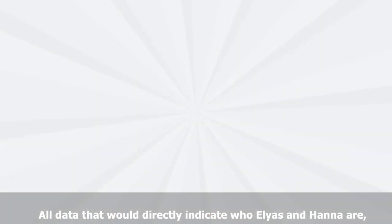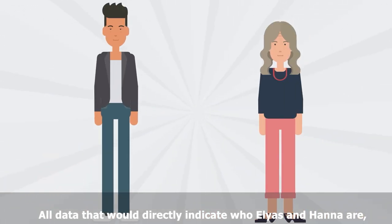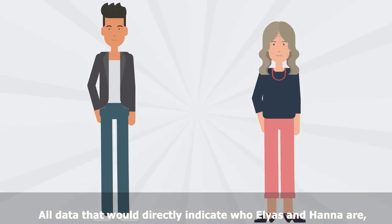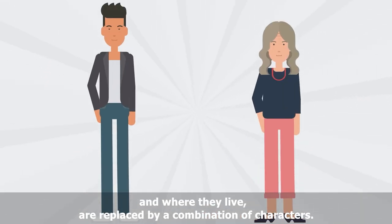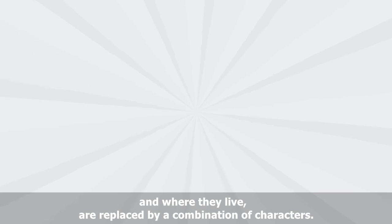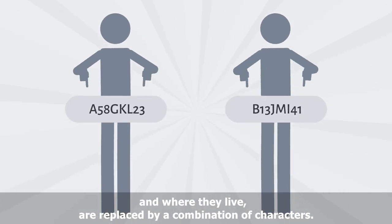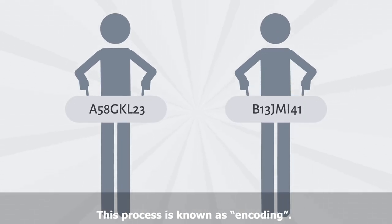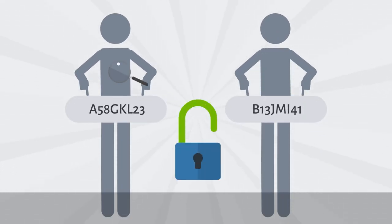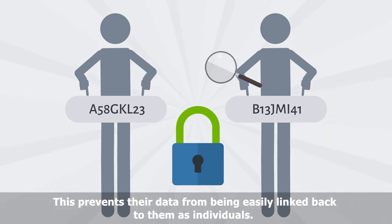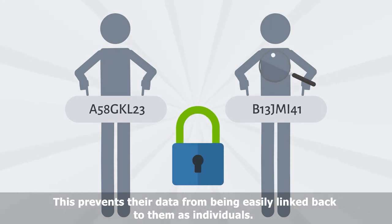All data that would directly indicate who Elias and Hannah are and where they live are replaced by a combination of characters. This process is known as encoding. This prevents their data from being easily linked back to them as individuals.